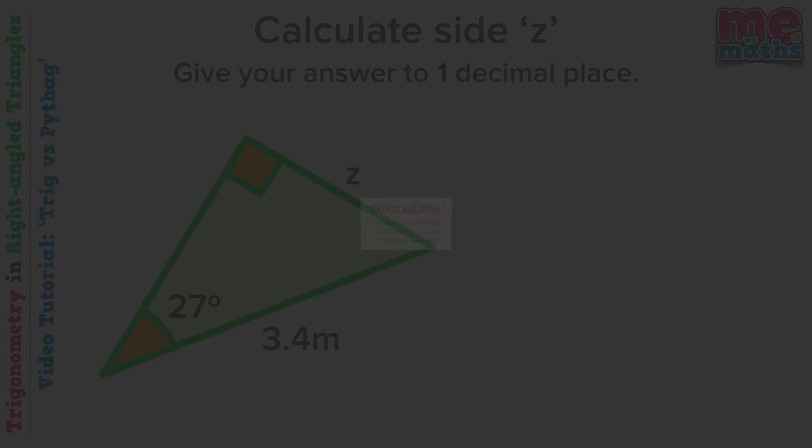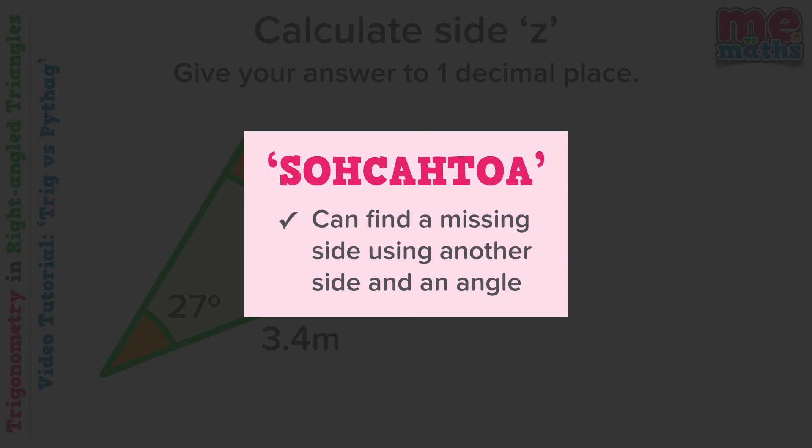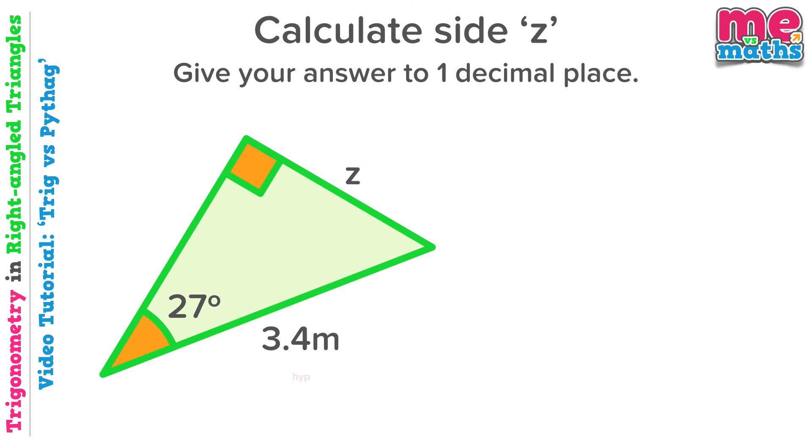Therefore we are using trig, as it allows us to find a missing side using another side and an angle. I'll speedily label my sides and identify the two active sides. So it's SOHCAHTOA, it uses an O and an H, so we'll be using sine.